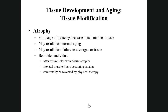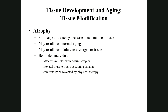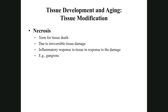Atrophy means a tissue gets smaller or shrinks — use it or lose it. Hypertrophy is the process of increasing tissue size or the size of cells in a tissue. Hyperplasia refers to an increased number of cells in a tissue — a callus is one example. Necrosis refers to tissue death following injury — 'necro' means death.